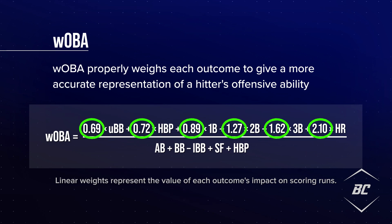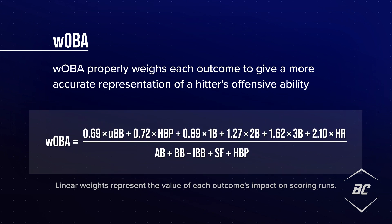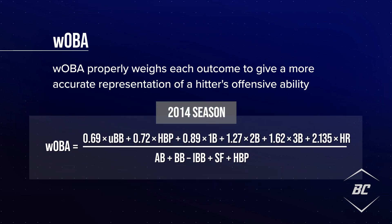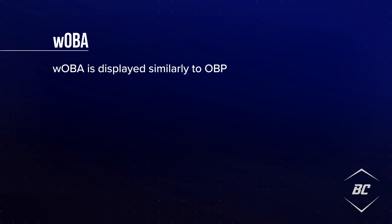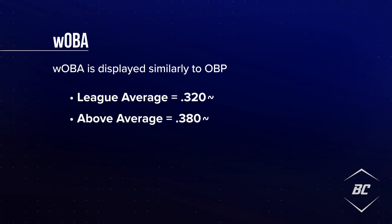These weights may change slightly from year to year depending on the overall league run scoring environment. For example, in 2014 when home runs were down, the weight assigned to home runs was 2.135. In the home run record-breaking year of 2019, the weight for home runs was 1.94, because they were so prevalent their value was not as great. You can find these coefficients on Fangraphs.com.